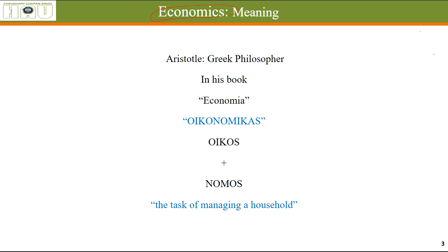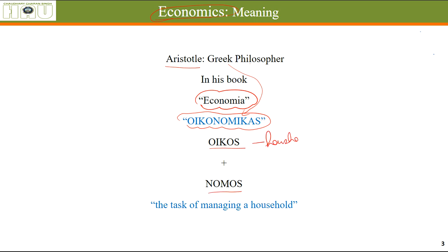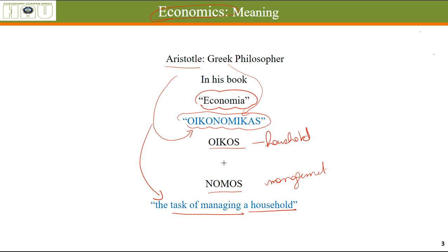What exactly does the word 'economics' mean? It was given by a Greek philosopher named Aristotle in his book named Economia. The Greek word 'economicus' is made up of two words: 'oikos' meaning household, and 'nomos' meaning management. So he meant that economics referred to the task of managing a household. The meaning has later changed because the economy is now about managing entire countries and the entire globe — the scope has increased from a household to a much larger level.